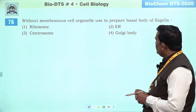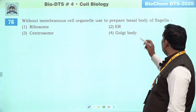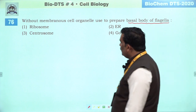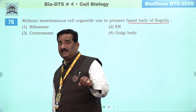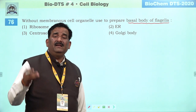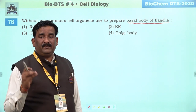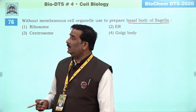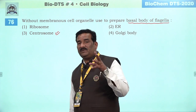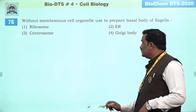Next question: without membranous cell organelle — they are used to prepare basal body of flagella. Basal body of flagella centrosome banaata hai, khaas taur se centriole se. NCRT ne cilia flagella waale section mein likha rakha hai ki basal granule of cilia and flagella are prepared by centriole. Means centrosome is the right answer, because two centrioles are present in centrosome. Third is right.